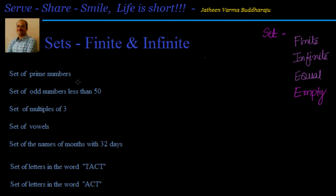The first example is set of prime numbers. To represent any set in roster form, I put curly braces and write down all the elements. The set of prime numbers starts with 2, then 3, 5, 7, 11 — and you can see I can write so many of them. When I cannot complete the list, I put three dots, which indicates that the list is continuing and can be extended forward.